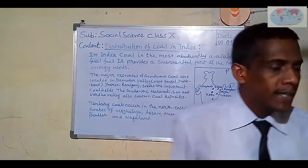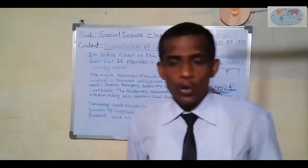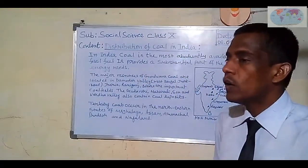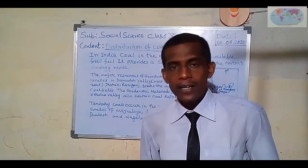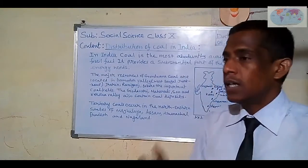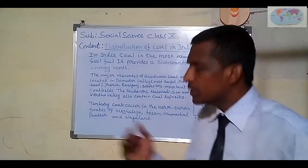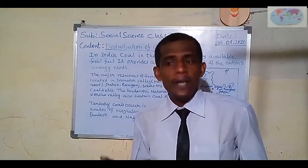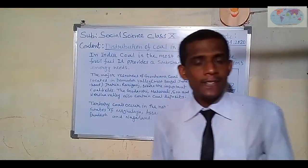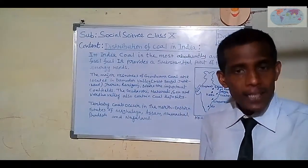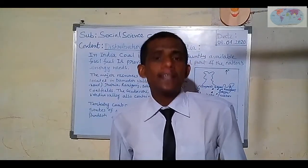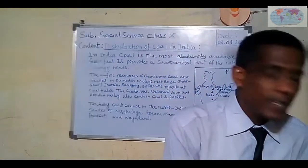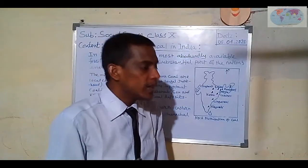For distribution of coal in India, there are many coal fields available in some regions. In West Bengal and Jharkhand, Dhanbad and Jharia are the most famous coal fields. In Madhya Pradesh, Singrauli is one of the important coal fields. In Korba, located in Chhattisgarh, it is also very famous. In Odisha, Talcher is notable. Singareni is in Andhra Pradesh, and Neyveli, which is a lignite reserve, is located in Tamil Nadu.